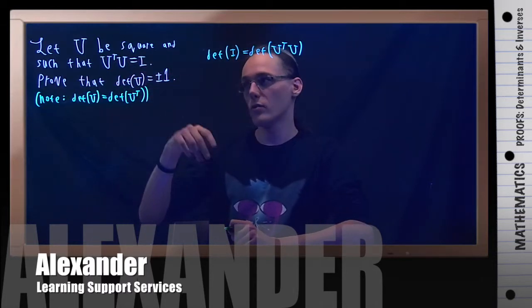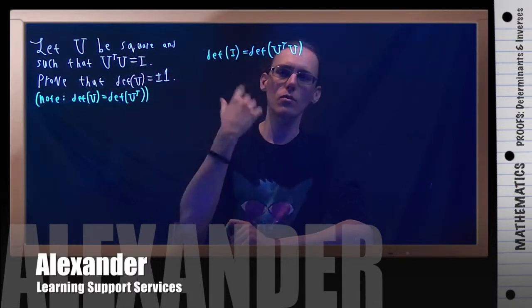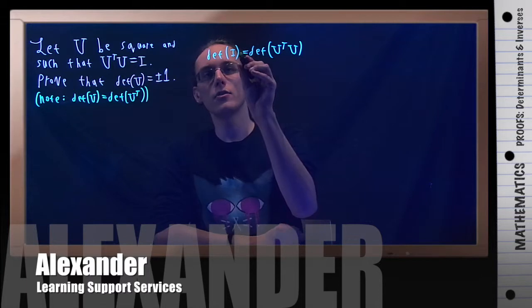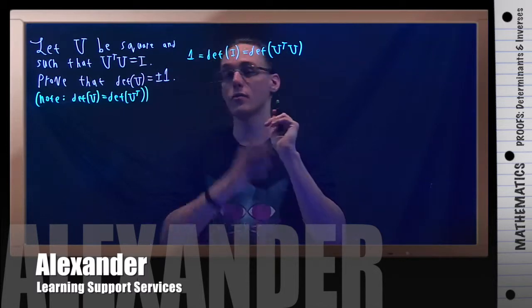If one matrix equals another, then the determinants must also be equal. The determinant of the identity is 1, so I've already got an identity that involves 1.